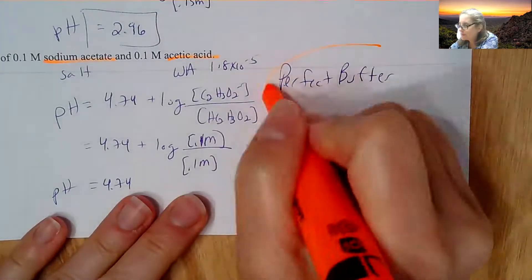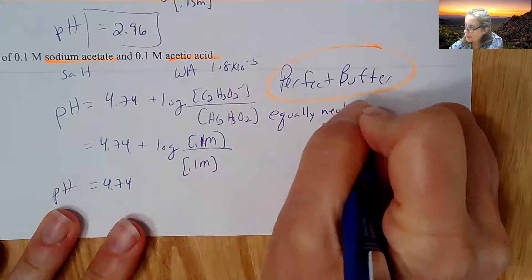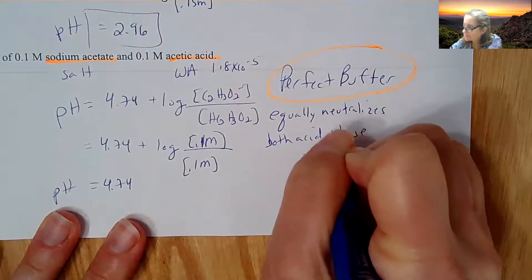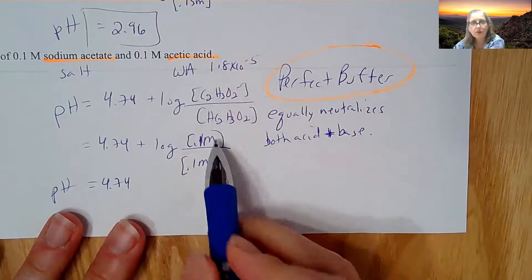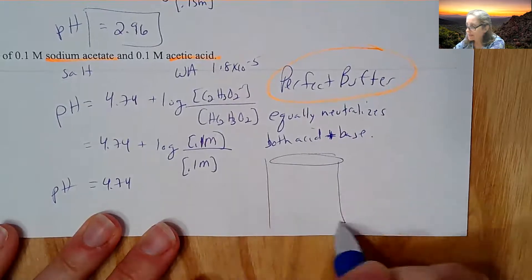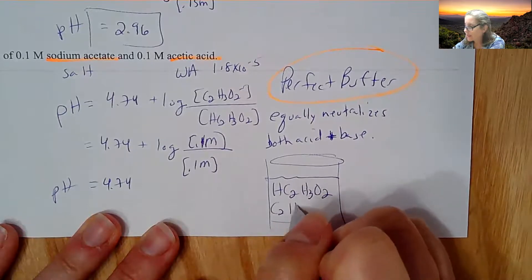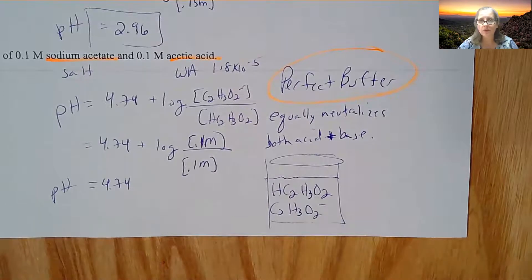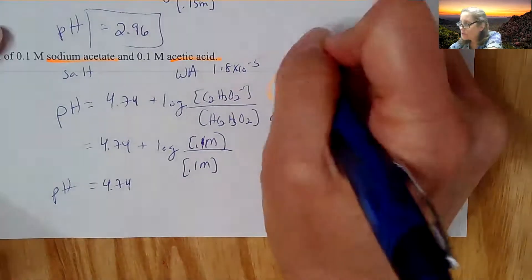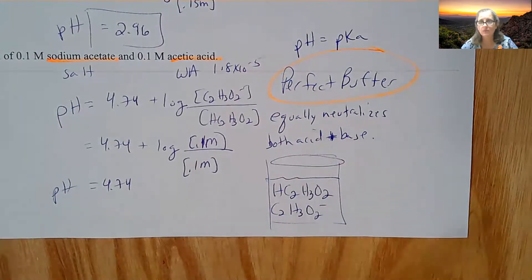So it's called a perfect buffer. Now the reason it's called a perfect buffer is because it equally neutralizes both acid and base. And that is because if I have equal concentration of both the acidic component and the basic component, then they will equally take care of whatever is added in there. So if I were to draw this in a beaker, the actual two species in there would be drawn to be pretty much the same size. So that's what we mean to have a perfect buffer.